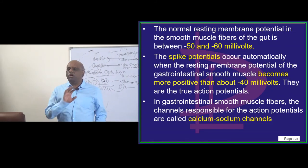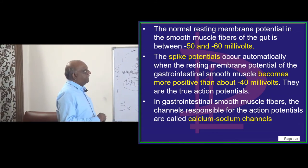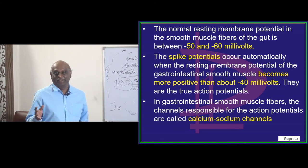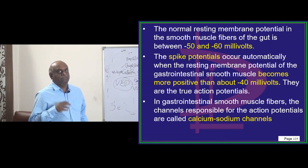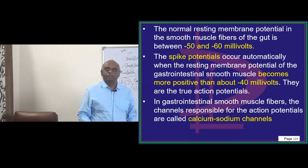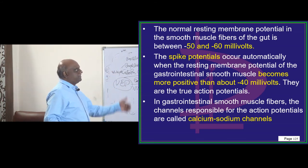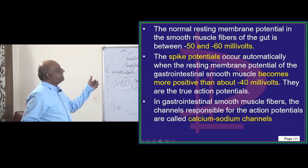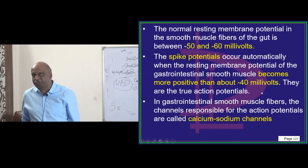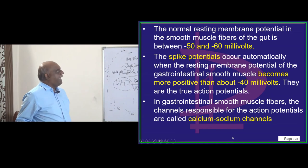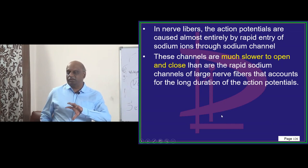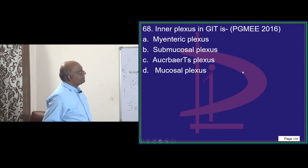The normal resting membrane potential of the gut — just like a heart has a pacemaker, the gut also has a resting membrane potential. How much is that? Minus 50 to minus 60 millivolts. There are spike potentials that occur automatically whenever the resting membrane potential comes down to minus 40 millivolts, becoming positive. That opens calcium-sodium channels, leading to muscle contraction and sustaining peristalsis.